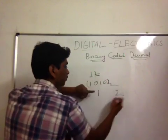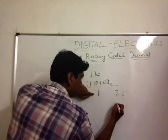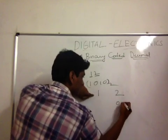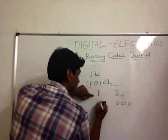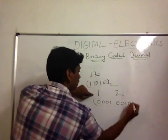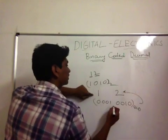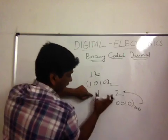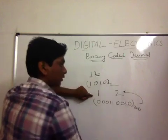For example, you have 12. I will write down for 2 individually, which is 0010, and for 1 individually, which is 0001. So this is the binary coded decimal for 12 — I write down for 1 individually and 2 individually.